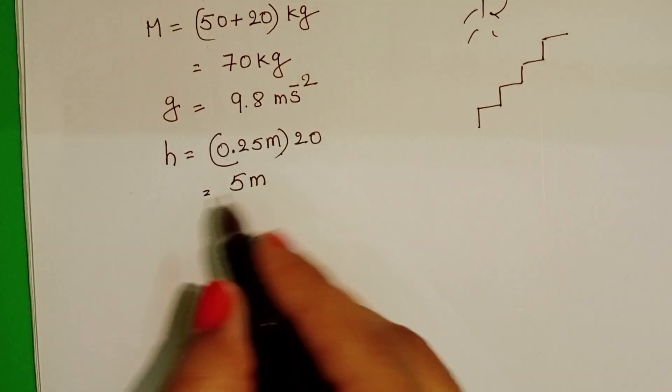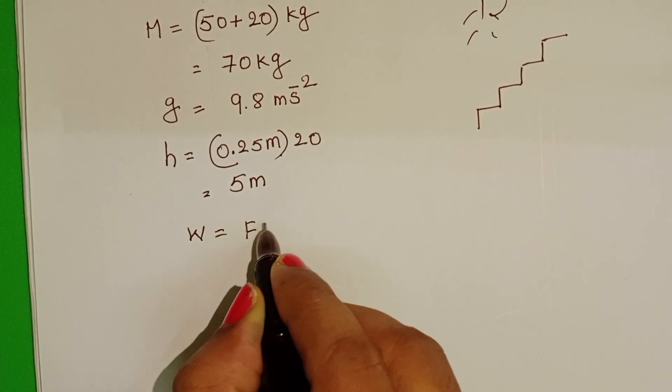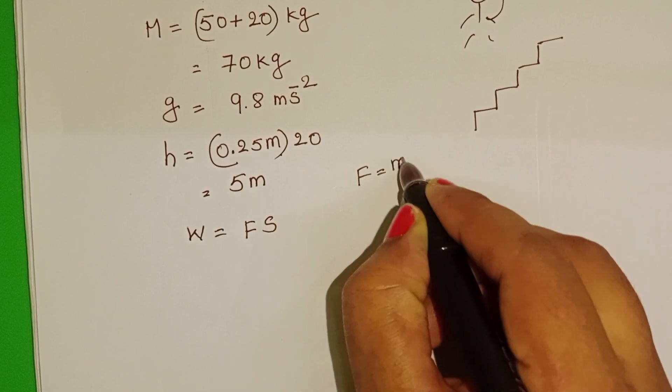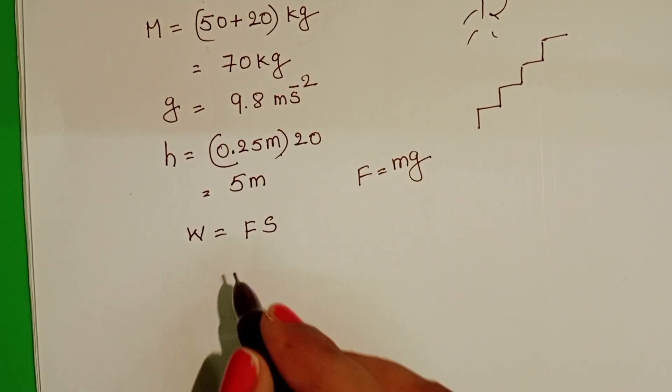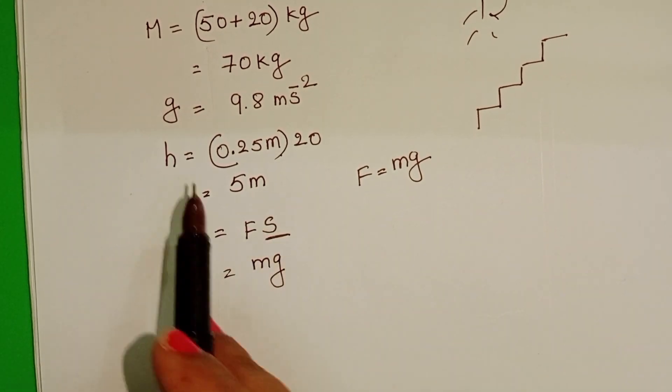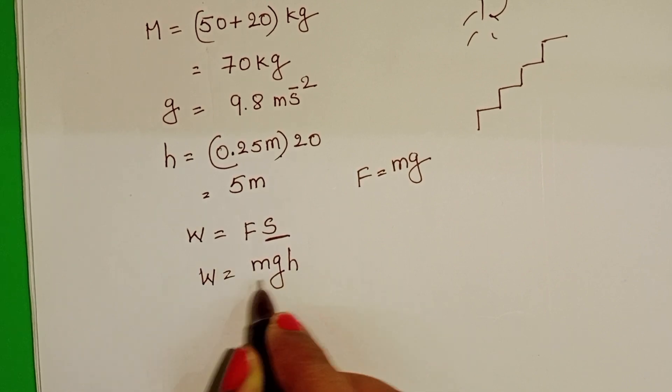And the work done by the person is against gravity. We know work formula is force into displacement. Here, force equals mg, mass into acceleration due to gravity. And displacement is nothing but height of the steps. So, take the formula mgh.